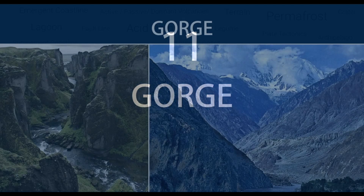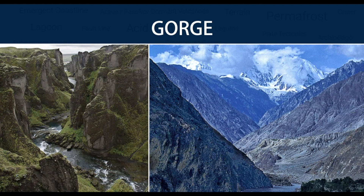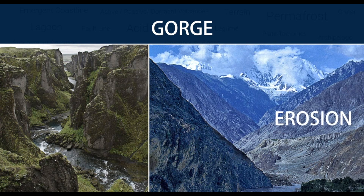Number 11 — Gorge. A gorge is a narrow valley with steep, rocky walls located between hills or mountains. The most common reason for the formation of a gorge is erosion due to streams or rivers.